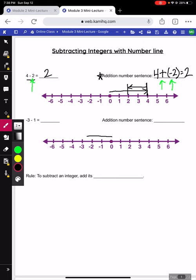Negative 3 minus 1. Again, we're going to draw an arrow to our first number. And this time we're subtracting 1, so we're going to go one more to the left to end up at negative 4.